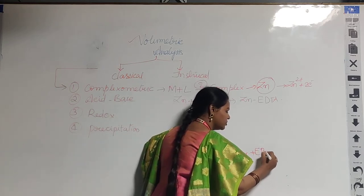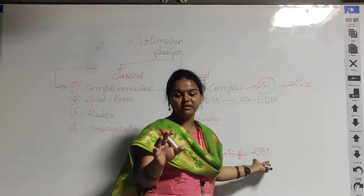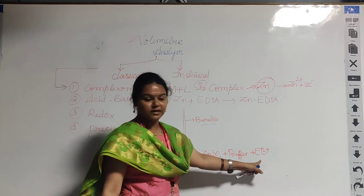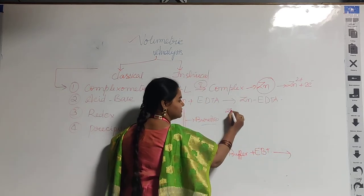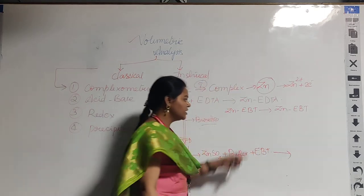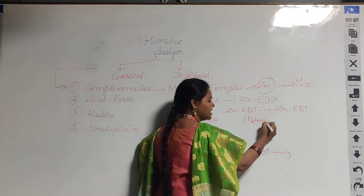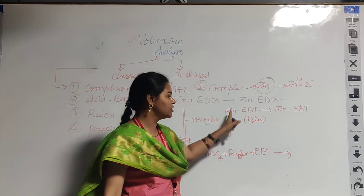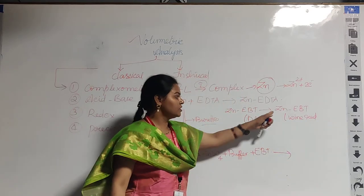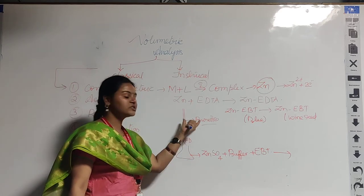An indicator is also used. In classical volumetric analysis, an indicator is preferred to observe any colour change. For example, zinc reacts with EBT (Eriochrome Black T), forming a zinc-EBT complex. In the laboratory, EBT itself is blue in colour, but when it reacts with zinc sulfate solution, it is converted to wine red in colour. This wine red zinc-EBT complex forms in the conical flask.